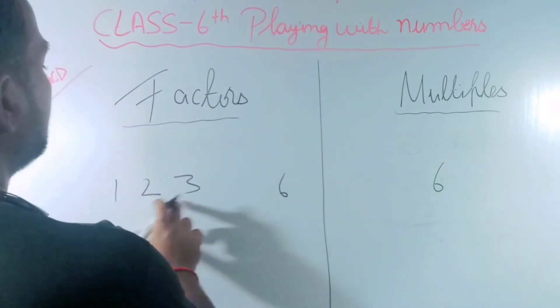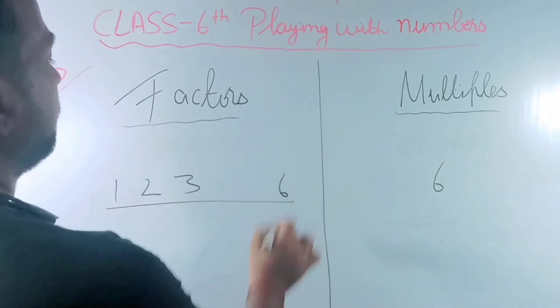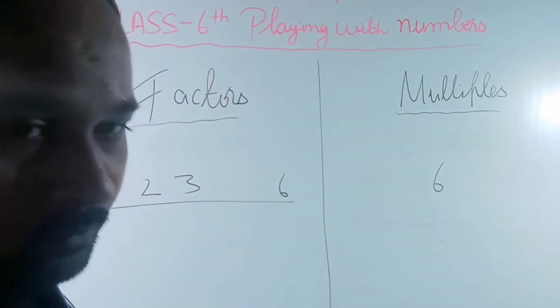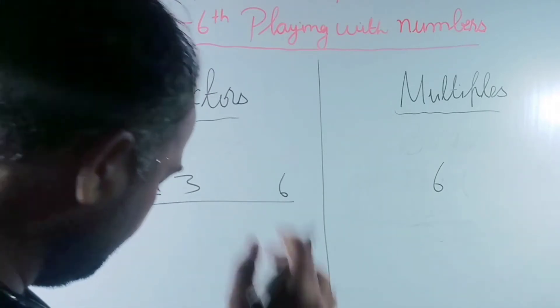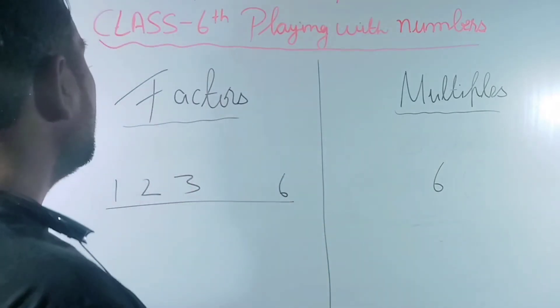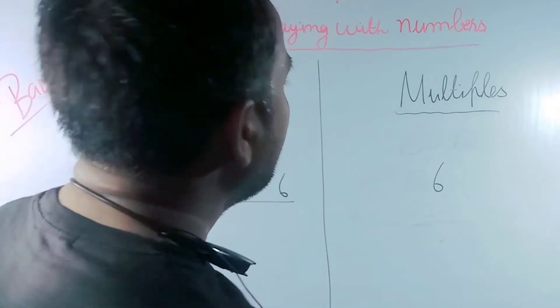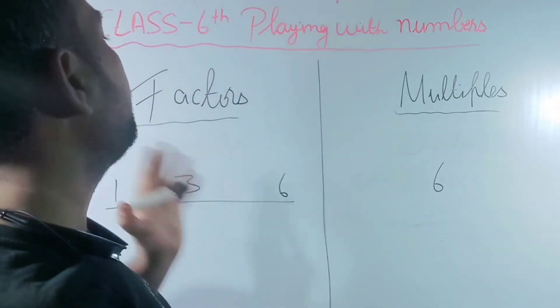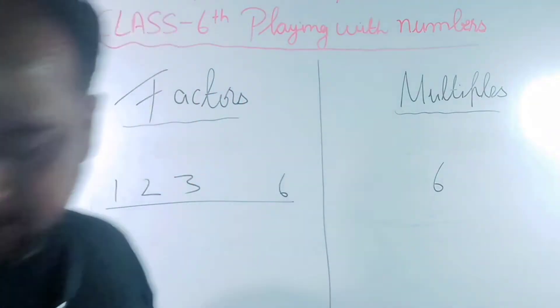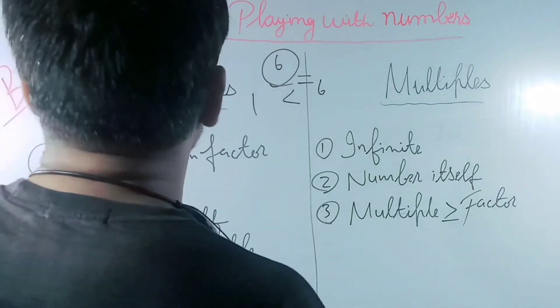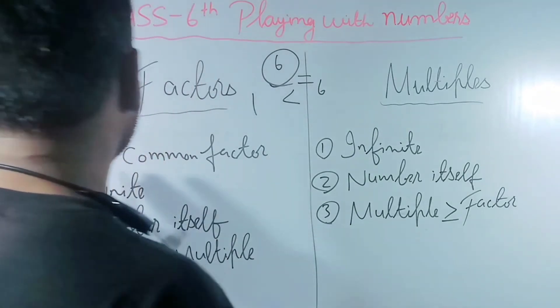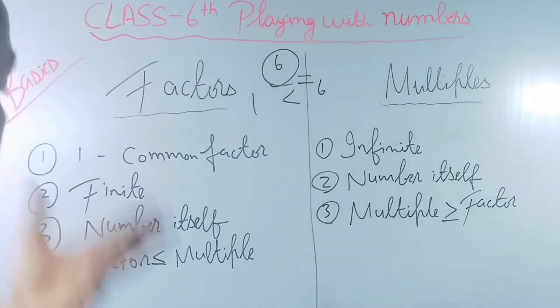1, 2, 3, 6 - only 4 factors. Now let's understand rules of factors and multiples. First rule: one is a common factor of all the multiples. Second one: factors are finite.